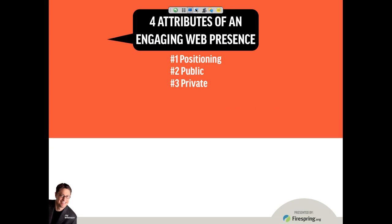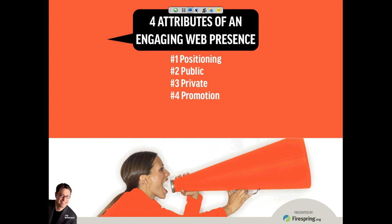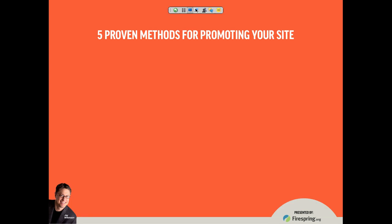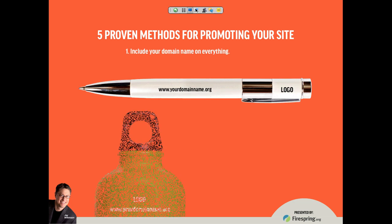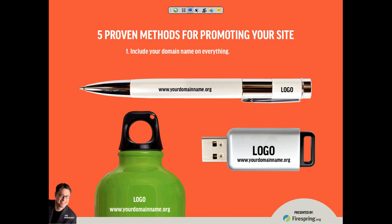The fourth attribute is promotion — how do we get the word out about our website so that people not only know that it's there, but know why they should go there? We'll talk about five proven methods for promoting our website. We start with the basic: get your domain name on everything. If you have freebies like water bottles or balloons at your event, put your domain name on there. Put it in the footer of emails. If you have a vehicle driving around town, get your domain name on it. If you're in a high-traffic location, put up a sign, banner, or window decal. Get your domain name on everything you possibly can — that's still very important and one thing that hasn't changed after all these years.